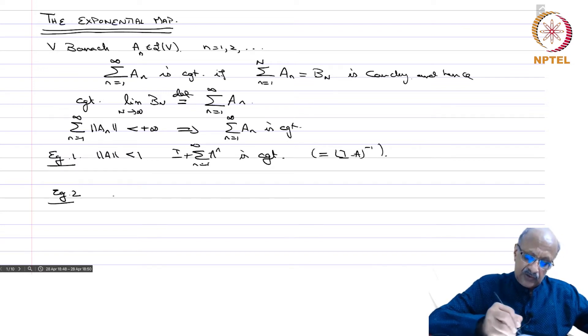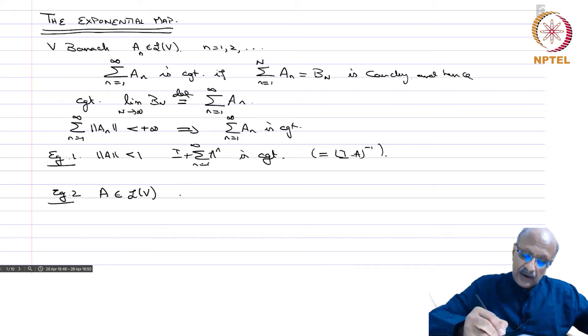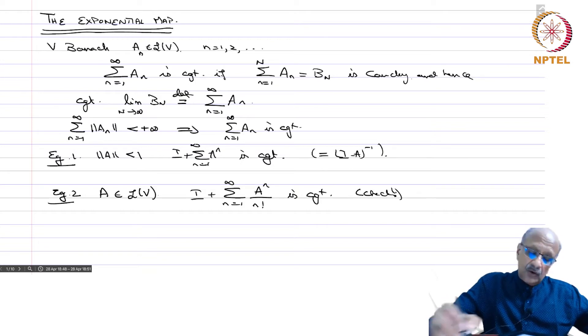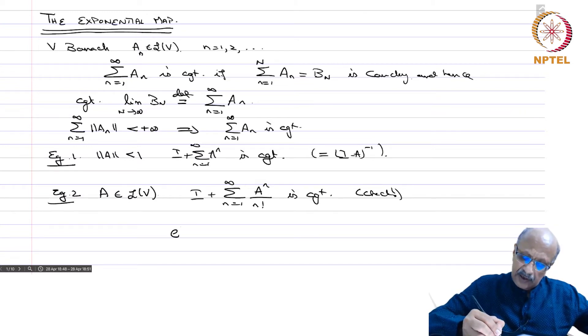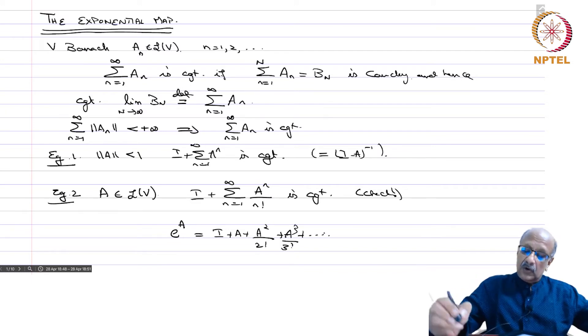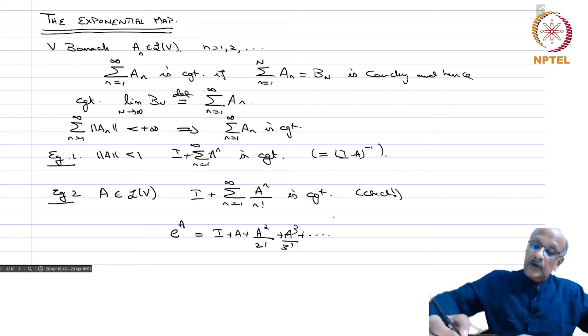The second example is the exponential series. For any A in L(V), you have that I plus sigma n equals 1 to infinity A^n by n! is convergent. To check, all you have to do is show that sigma norm A^n is convergent. And then the limit, e^A, is equal to I plus A plus A^2/2! plus A^3/3! and so on. This is called the exponential of a bounded linear operator.